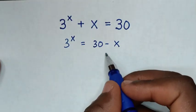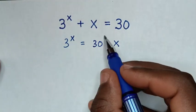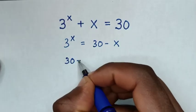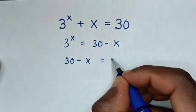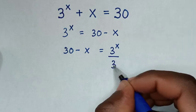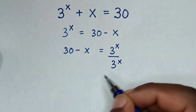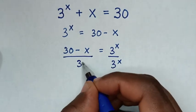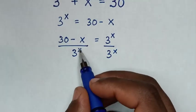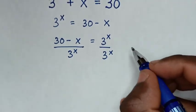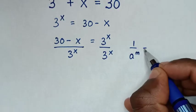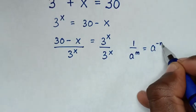Then we take 30 minus x to this side and 3 power of x to this side, so it will be 30 minus x is equal to 3 power of x. Then we divide by 3 power of x on both sides. From the denominator of 3 power of x, we will apply the rule: 1 over a power of m is equal to a power of negative m.